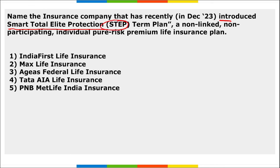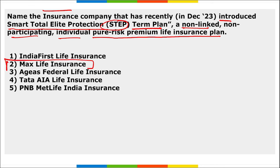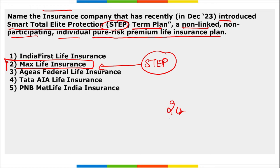Next: name the insurance company that recently introduced the STEP (Smart Total Elite Protection) term plan — a non-linked, non-participating individual pure risk premium life insurance plan. It was launched by Max Life Insurance. The aim is to enhance financial security in the current dynamic landscape, with enhanced coverage of up to 2 crore rupees.